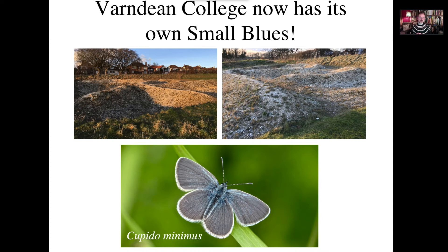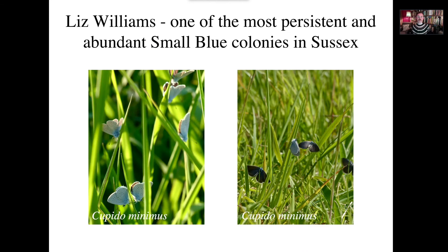It also makes us realise that because we're working with early successional organisms, we need to continuously recreate these habitats throughout the landscape and have this age range of different sites so that we have meta-population dynamics working throughout the landscape. Back at the Liz Williams butterfly haven, you can now see that the small blue colonies are the most persistent and most abundant within Sussex.